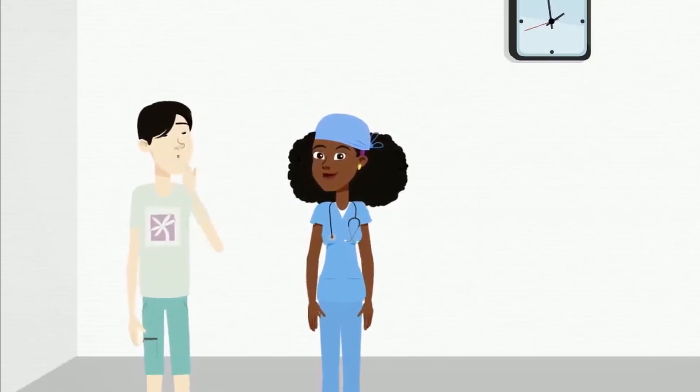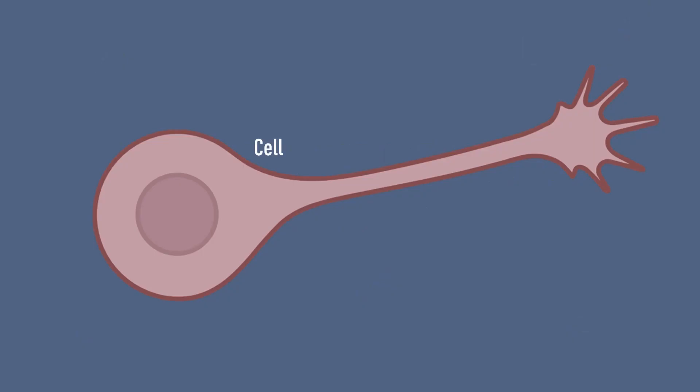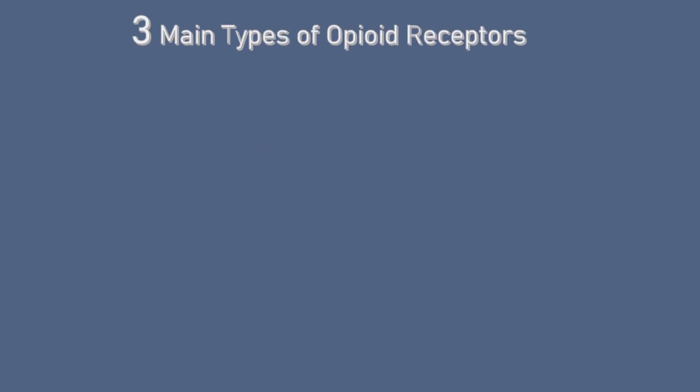Of course I can help. First, to understand how opioid overdoses occur, we must learn about the mechanisms behind the effects of opioids. To begin, the nerve cells located throughout our body contain opioid receptors. There are three main types of opioid receptors: mu, kappa, and delta.